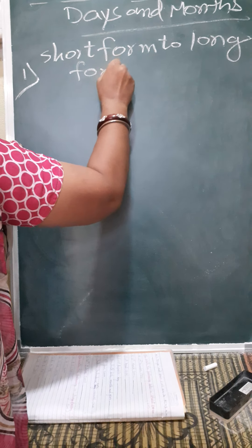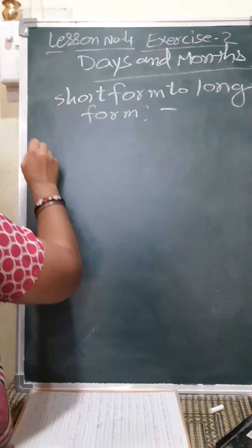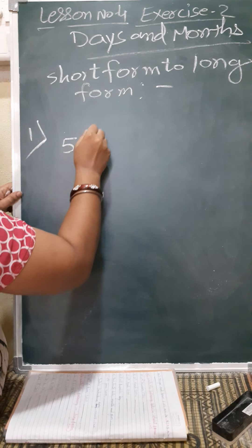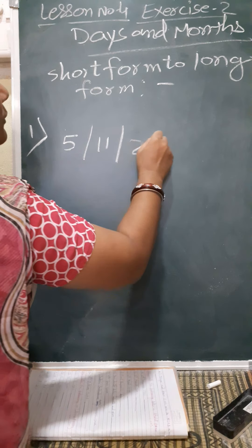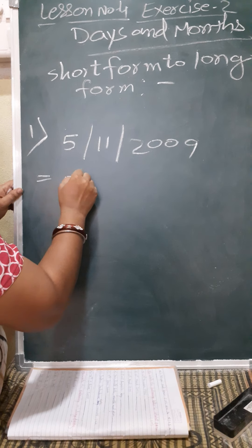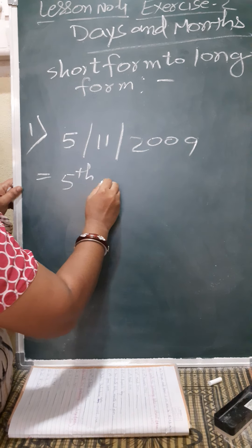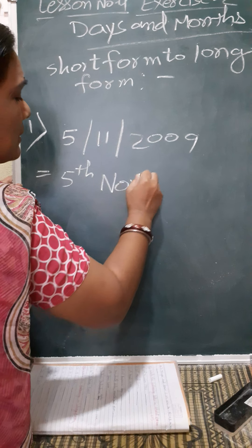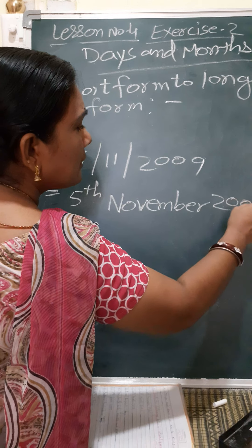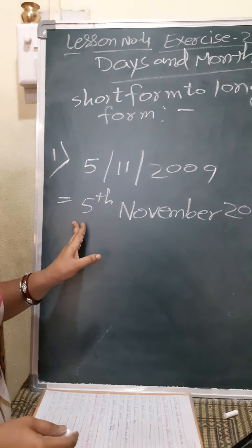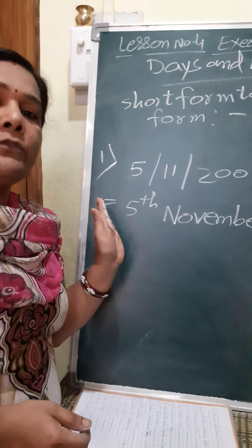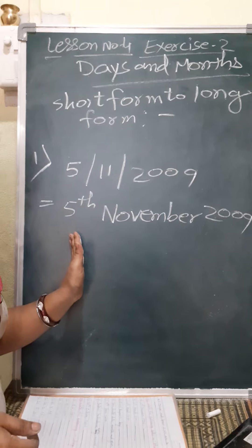Now opposite — short form to long form. Suppose 5/11/2009: 5th is the date, 11 means November which is the 11th month, and year is 2009. So in long form it is written as 5th November 2009. I hope you have understood this concept. Based on this I am going to give a worksheet tomorrow — please do it yourself. Thank you.